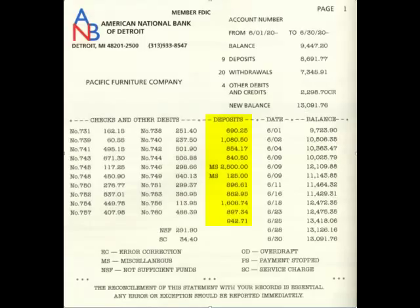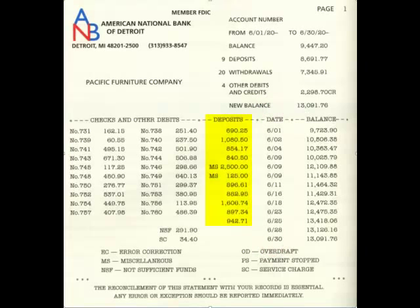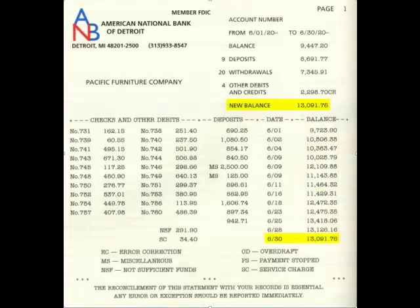Moving over to the next column titled deposits, these are a list of all the different deposits that were put in during the month, and just to the right of that are the dates those happened. These deposits are most often ones that Pacific Furniture Company physically took to the bank, but there may also be some other activity in there. Notice halfway down there are a couple of entries that say MS — we'll look at those in a minute. Over on the far right is the balance, the running total as of each of those days. The very last number on June 30th is the new balance listed at the top of the page.